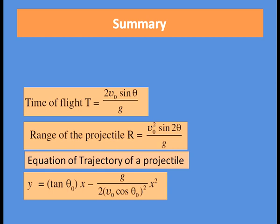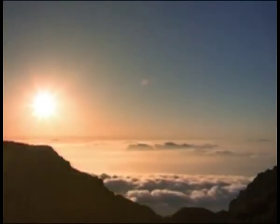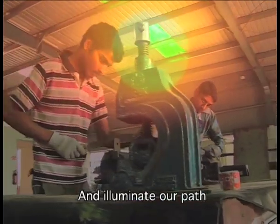The total time of flight T = 2·V0 sin θ / g. Range R = V0² sin 2θ / g. The equation of trajectory is y = tan θ₀ · x − g/(2·V0² cos² θ₀) · x², and the shape of trajectory is a parabola. I hope you have understood what we have discussed today. Wishing you all the best. Thank you.